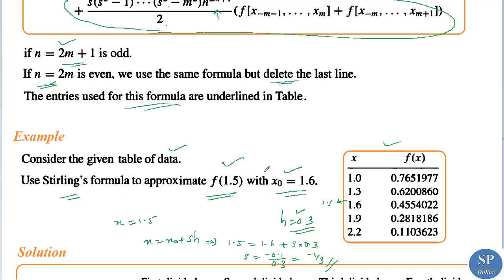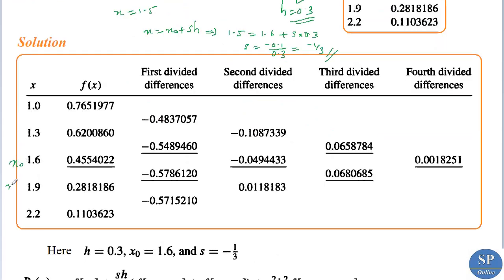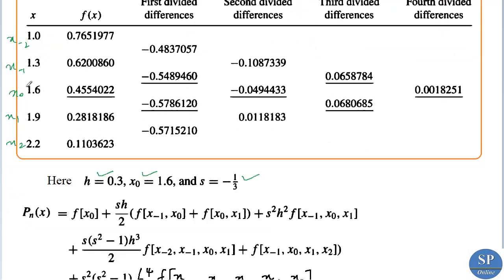To use Stirling's formula we first create the divided difference table. Using the data values at x = 1, 1.3, 1.6, 1.9, 2.2, we take x₀ = 1.6, so x₁ = 1.9, x₂ = 2.2, x₋₁ = 1.3, x₋₂ = 1.0. The corresponding function values are f(x₋₂), f(x₋₁), f(x₀), f(x₁), f(x₂). With h = 0.3, x₀ = 1.6, x = 1.5, we get s = −1/3. Since there are 5 data points, n = 4 = 2m, so m = 2.